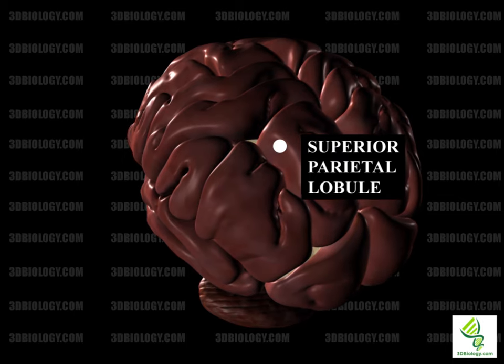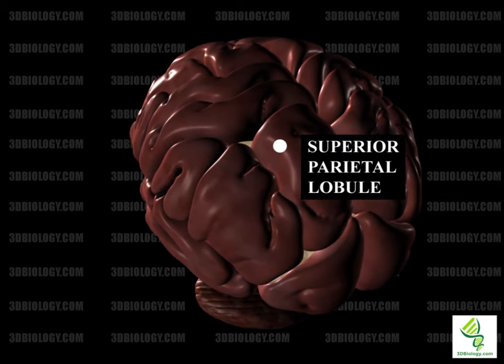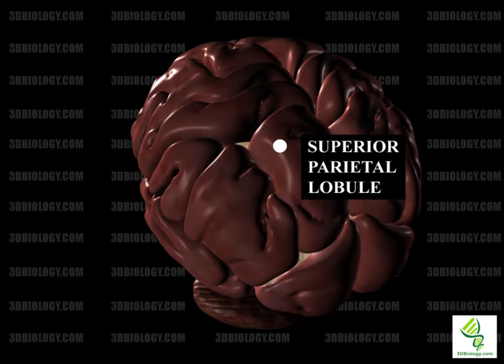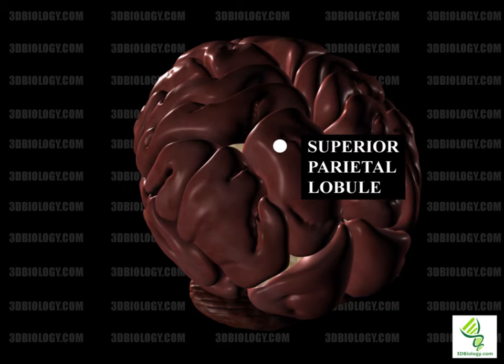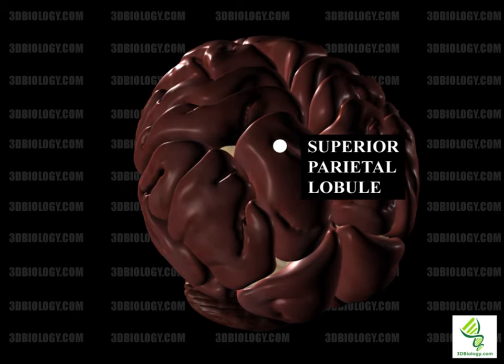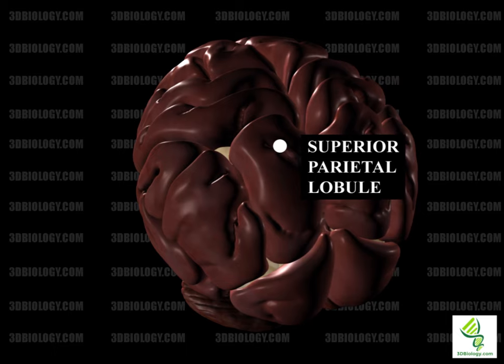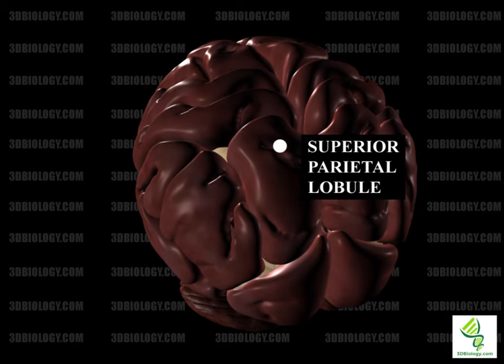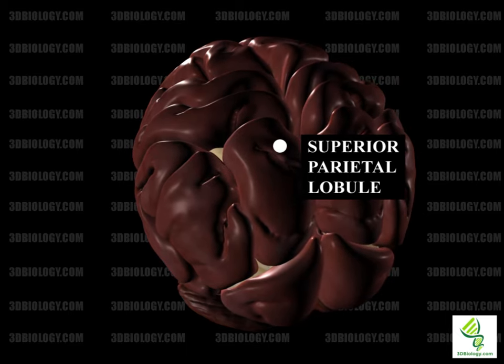The superior parietal lobule includes Brodmann areas 5 and 7. Its functions include spatial orientation; it receives visual input and sensory input.